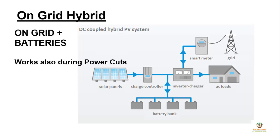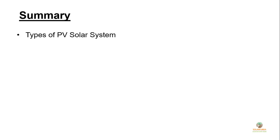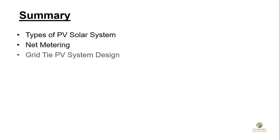Here is the on-grid hybrid system, where you can have battery backup. Normally, grid-type systems do not work during power cuts due to the anti-islanding feature in the inverter. An on-grid hybrid system works even during power cuts because the battery is available. You can select batteries according to your required backup time, and batteries get charged by both solar and the grid — though this system is slightly costlier than a normal on-grid system. To summarize this session, we learned about types of solar PV systems, net metering, how to design a grid-type PV system, the single line diagram, and the on-grid hybrid system.